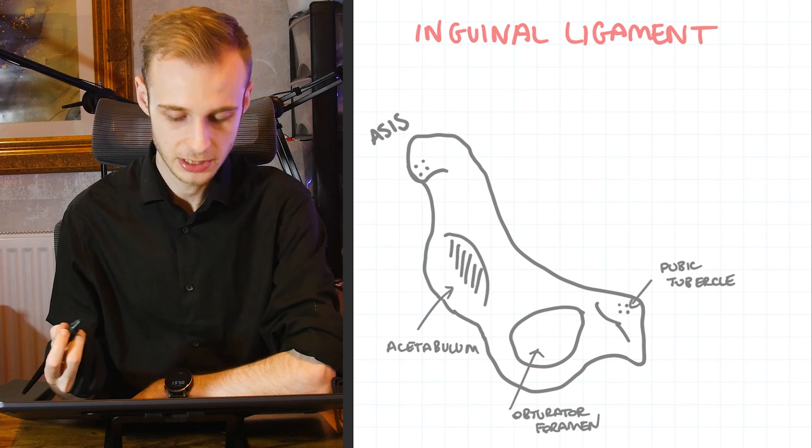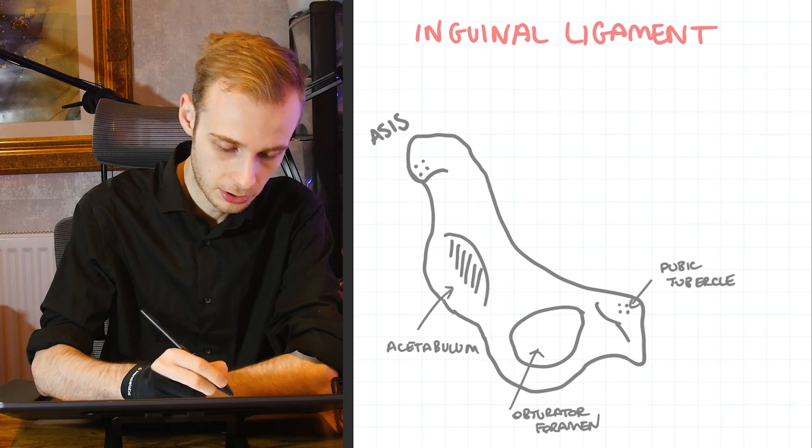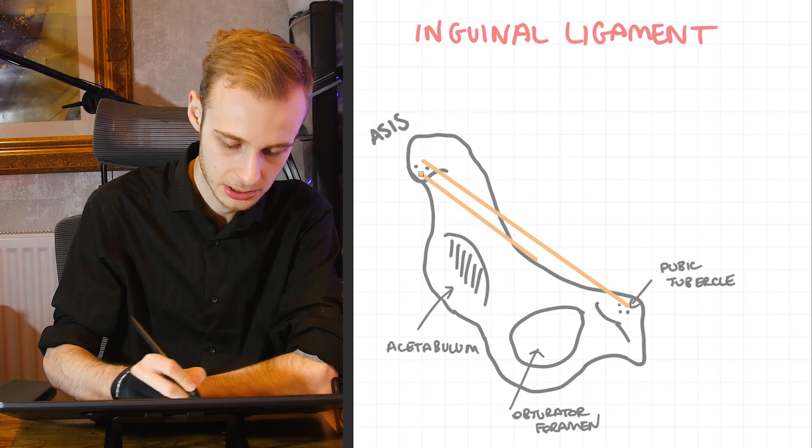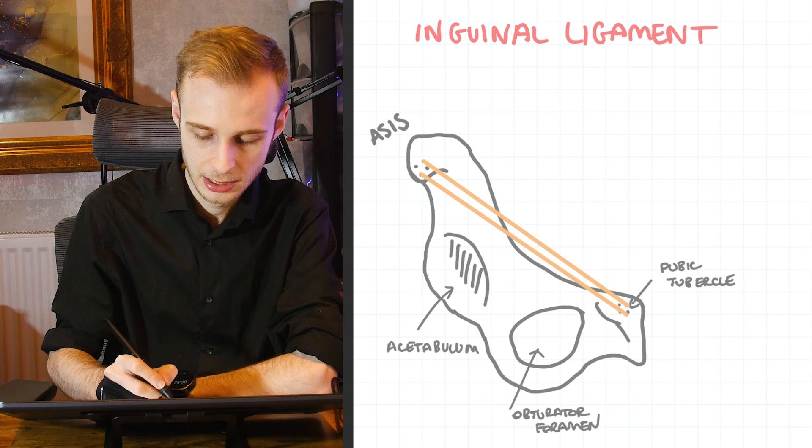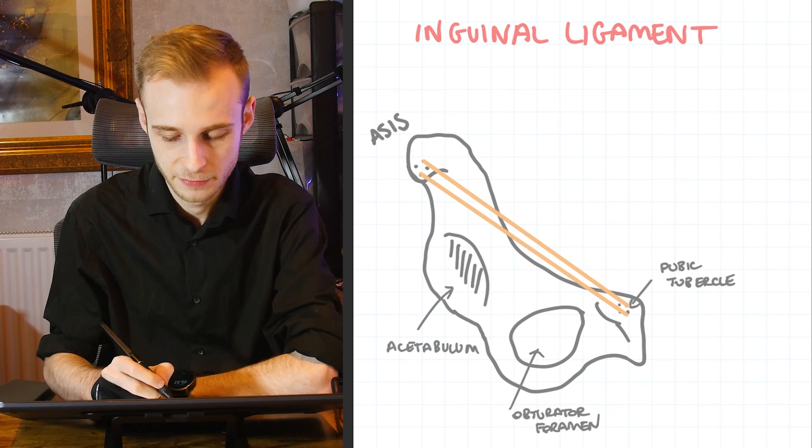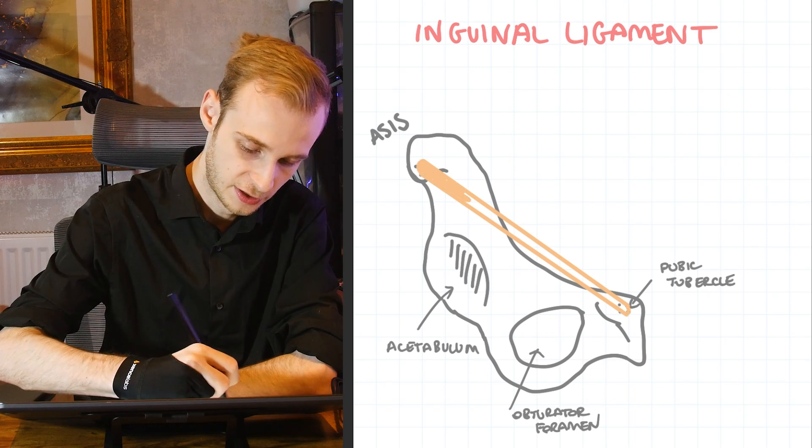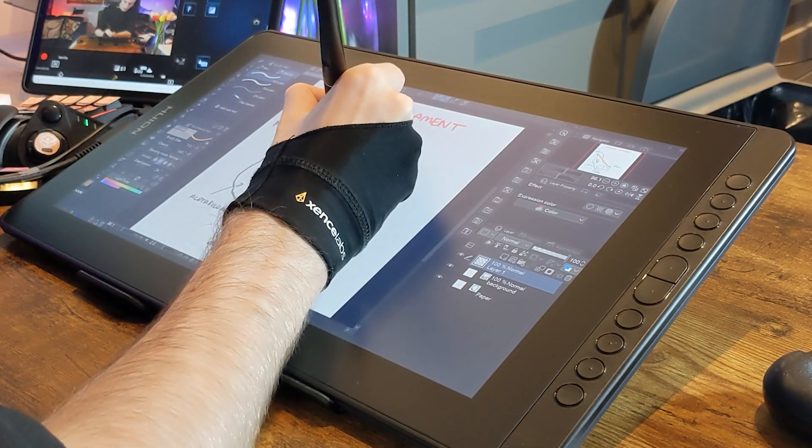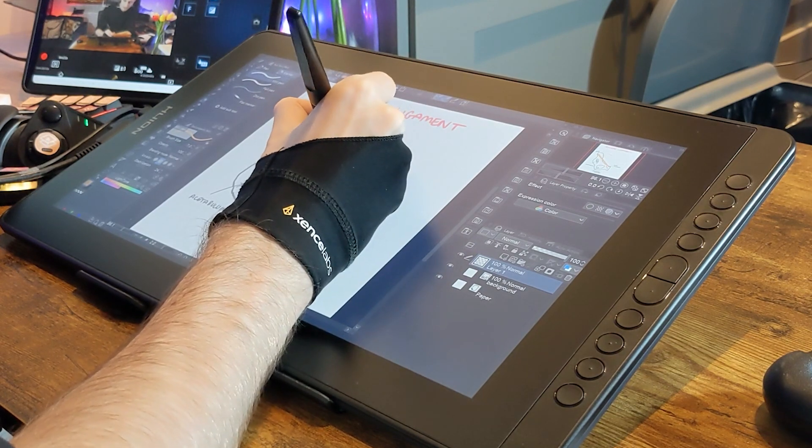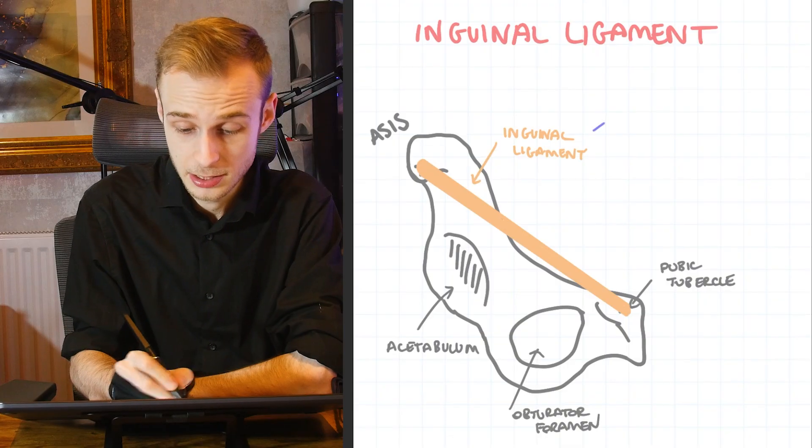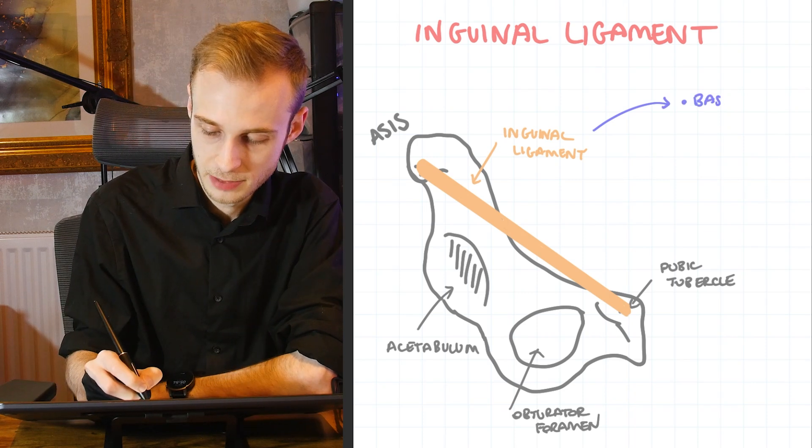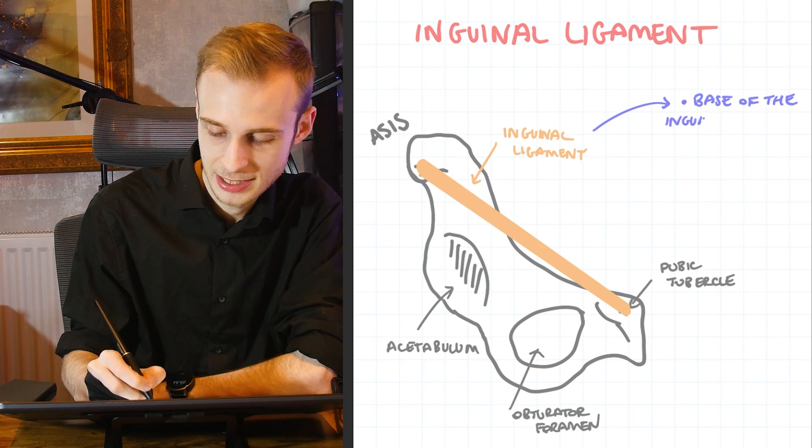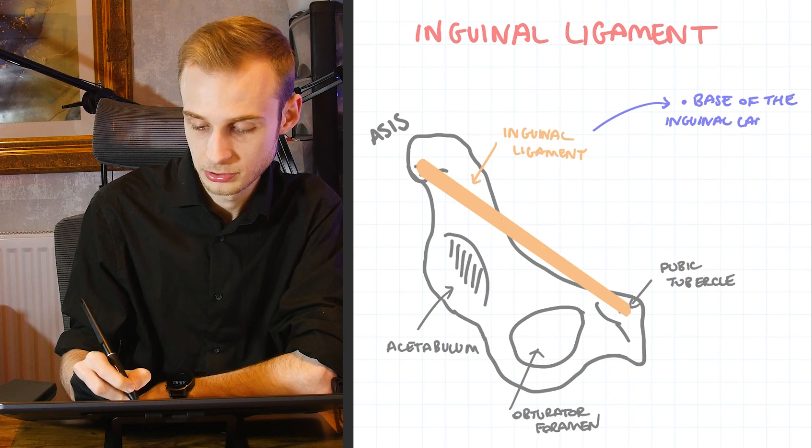At this point we're going to draw on our inguinal ligament, which runs from the ASIS, the anterior superior iliac spine, and it runs from there to the pubic tubercle, this raised nodular area of the pubic bone. I'm just going to fill it in because it's satisfying to do so. So what actually is the inguinal ligament? Why do we care about it? First and foremost, it forms the base of the inguinal canal, which is one of the classic anatomy structures.